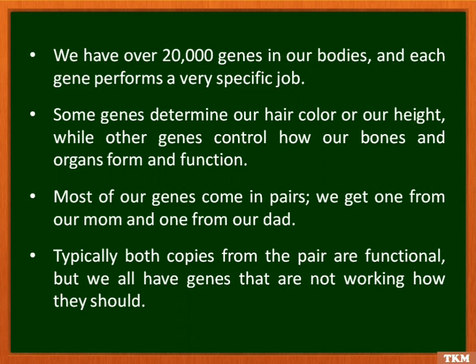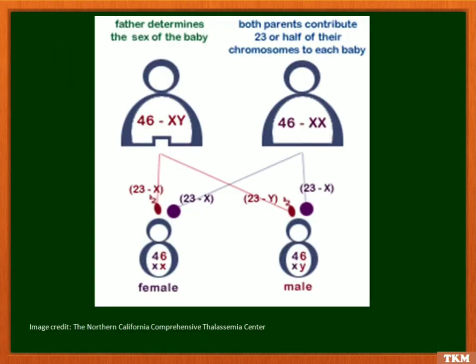Most of our genes come in pairs. There are 23 pairs of chromosomes — one we get from our mom and one from our dad. Typically both copies of the pair are functional, but there are also genes that are non-functional. So there are 23 pairs of chromosomes that constitute 46 chromosomes.